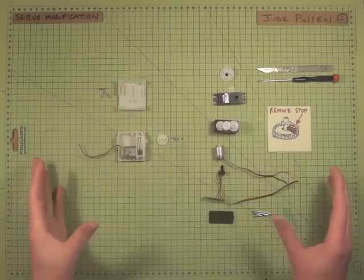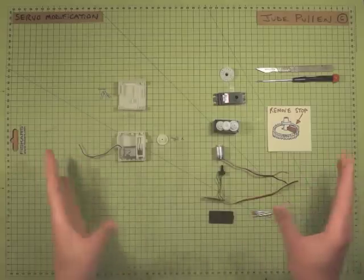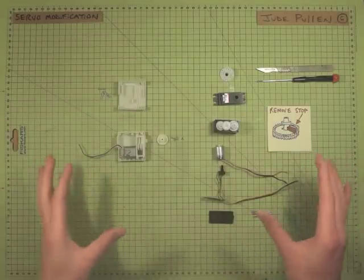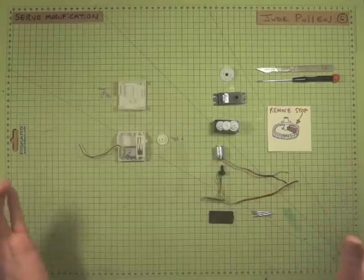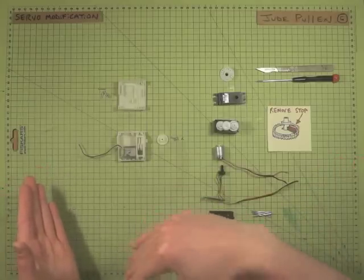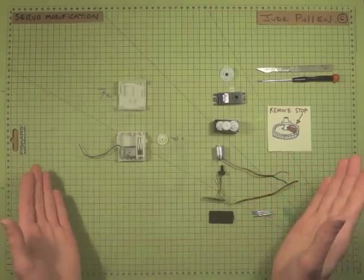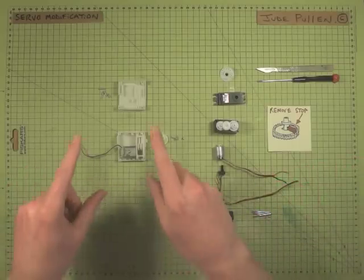Okay, so this is a quick servo modification. There's loads of information on the internet if you just Google how to make a servo 360 degrees rotation. Basically, the servo is usually only designed to go between zero to say 180 degrees, so it has a little detail that stops it from doing that. This is a really cheap, not even really a servo because it's not encoded.